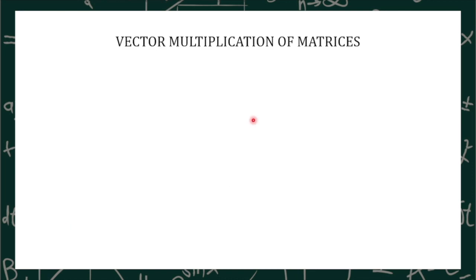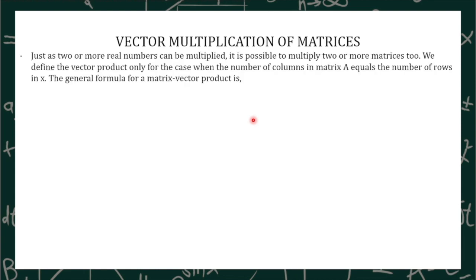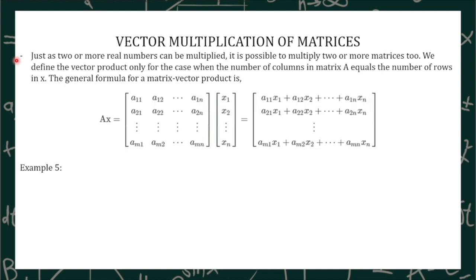Let's now proceed with our last topic, which is the vector multiplication of matrices. Just as two or more real numbers can be multiplied, it is possible to multiply two or more matrices too. We define the vector product only for the case when the number of columns in matrix A equals the number of rows in X. The general formula for a matrix vector product applies here. Let's take a look at example number 5.